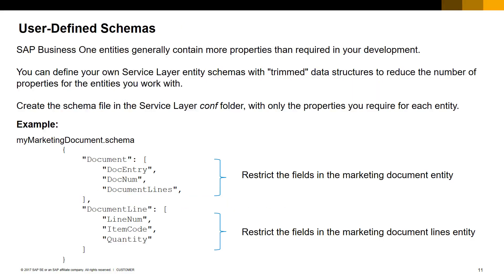User-defined schemas are another optimization you can use. Because SAP Business One entities generally contain more properties than required in your development, you can define your own schemas with streamlined data structures. This reduces the number of properties for the entities you work with.